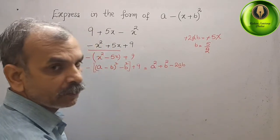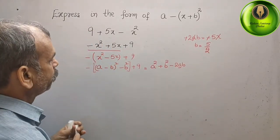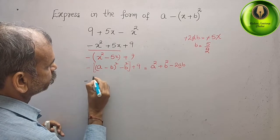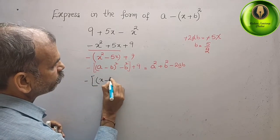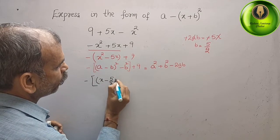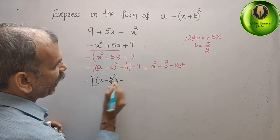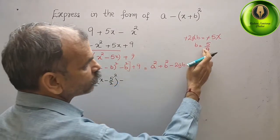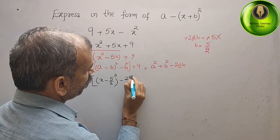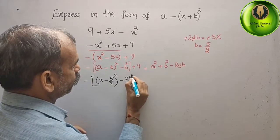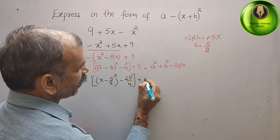We will substitute here. Here, we get minus, big bracket, x minus 5 by 2 whole square minus b square. That means 25 by 4, plus 9.